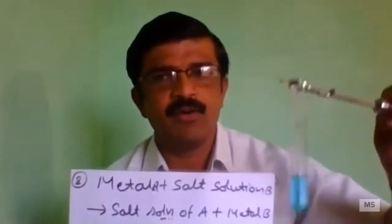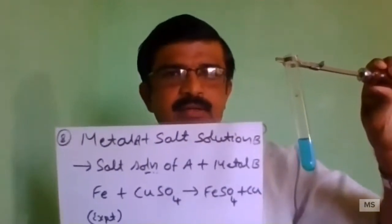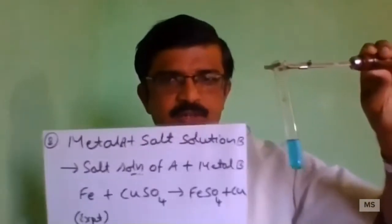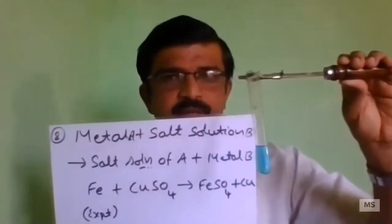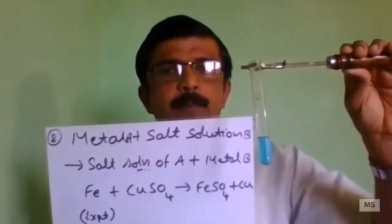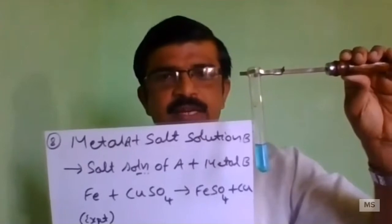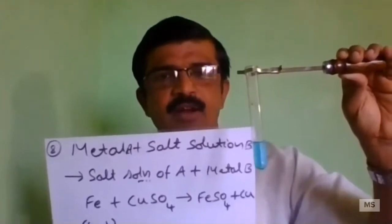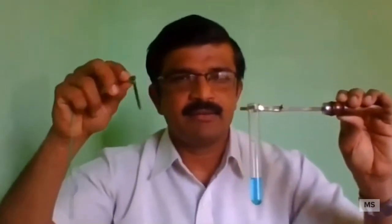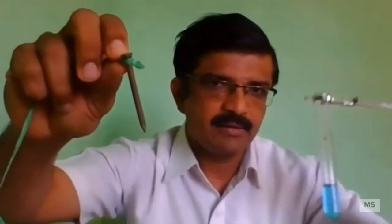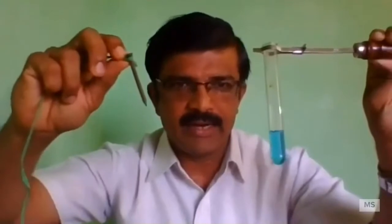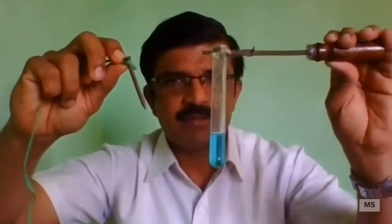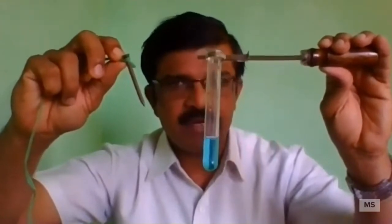I have a salt solution of B — one of the salt solutions is called salt solution of B. Now I have a copper sulfate solution. Salt solution of B is copper sulfate solution. When metal A comes — this is iron, an iron nail — metal A is iron nail, and salt solution of B is copper sulfate solution.